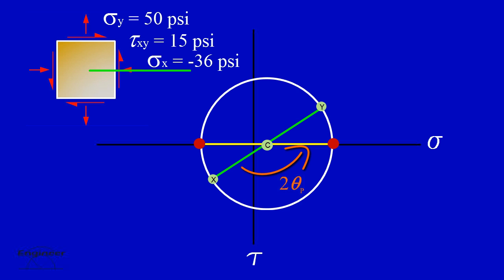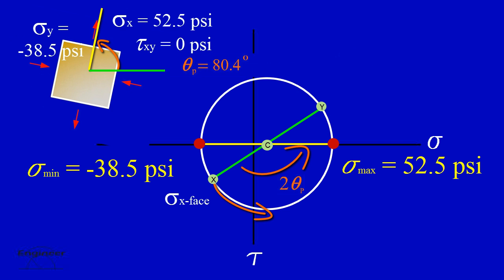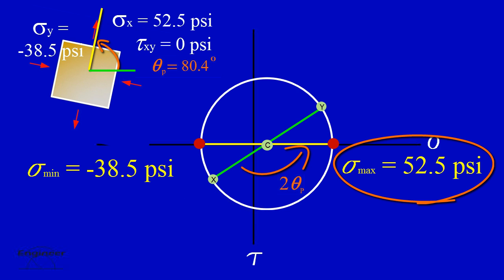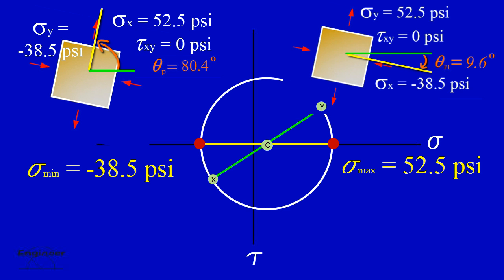Return to the original element and let's look at the principal angle in the opposite direction. This time rotate counterclockwise, which is a positive angle. The new principal angle theta equals 80.4 degrees. The element also rotates positive so that the x-face on the element becomes sigma max. The y-face on the element becomes sigma min and the shear stress equals zero. Compare the stresses on the element for the two principal angles — the orientation of the element and the stresses are exactly the same.